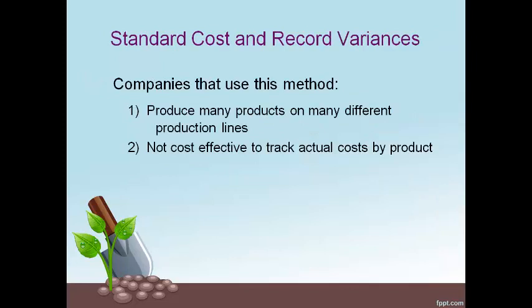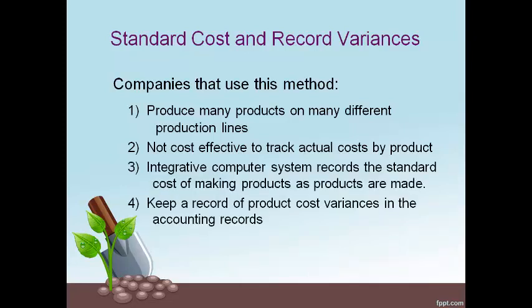This method is used by large companies that manufacture many different products on many different production lines. It is not cost effective to track costs to each product where costs are being made. The company generally has an integrated accounting system that records costs at the standard cost of making each product. Variances are included in the entries that are made to record the flow of product cost.